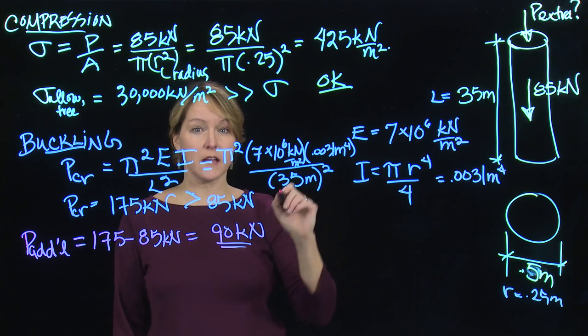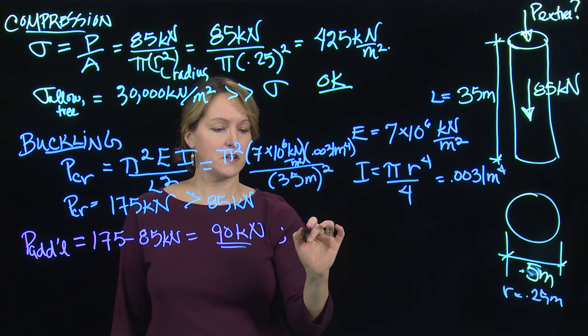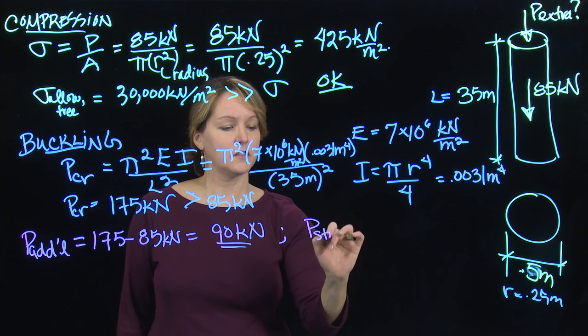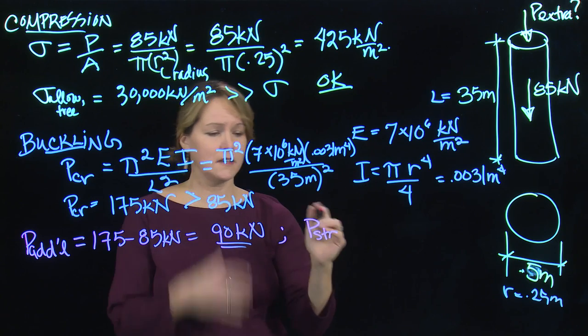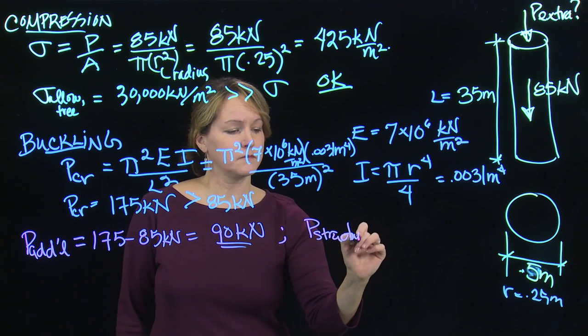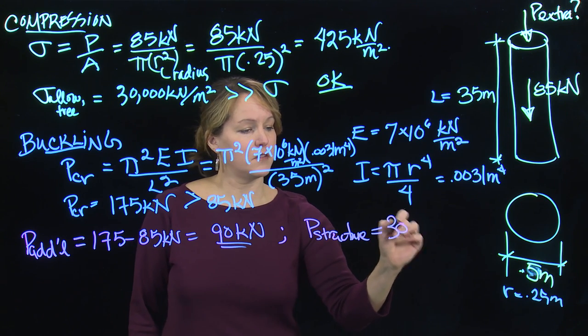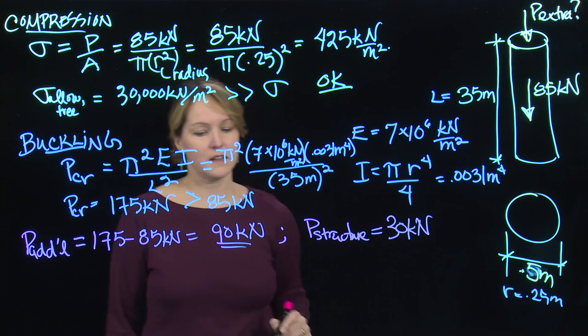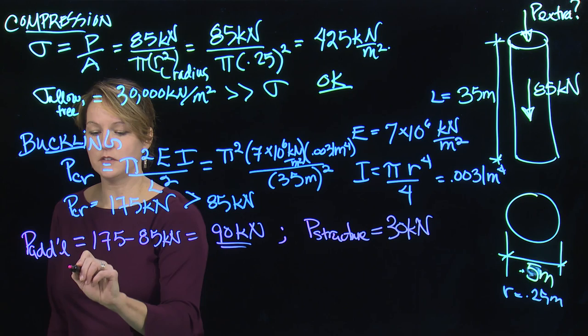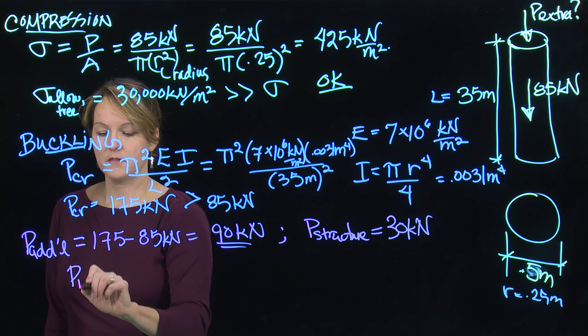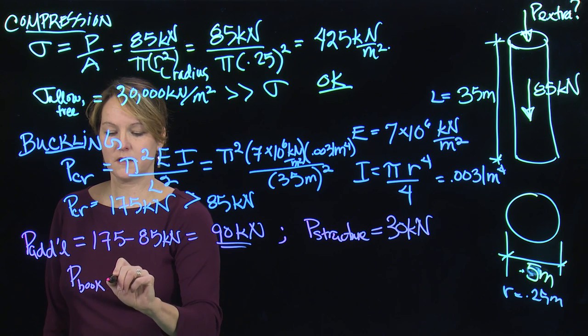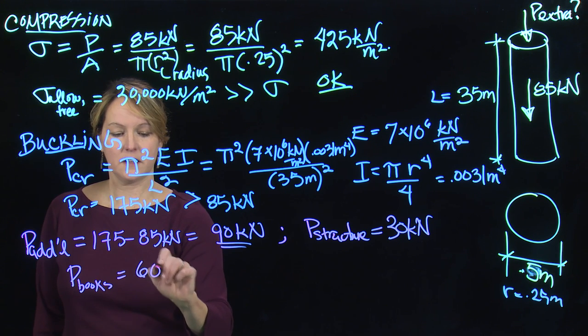He's going to need some structure for his library, so I'm just going to make an assumption that the load for the structure, the wood that we'd use for the library, let's assume that is going to weigh 30 kilonewtons. That's going to leave 60 kilonewtons. P for books, the allowable load for books is 60 kilonewtons.